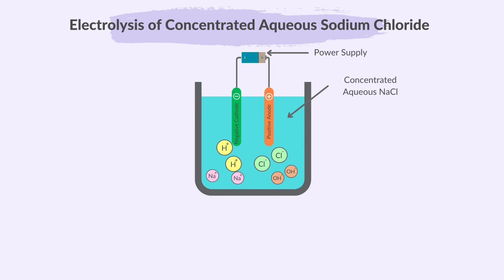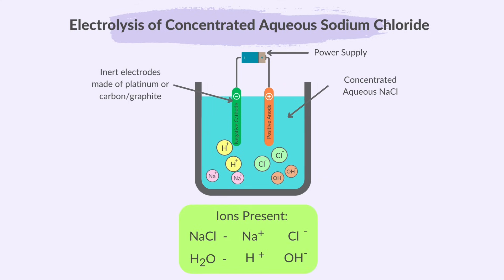Let's observe the electrolysis of concentrated aqueous sodium chloride. Once again, using inert electrodes made of platinum or carbon graphite, we arrange the electrolyte for electrolysis. Remember, in the electrolysis of an aqueous solution, the ions in the electrolyte come from both the dissolved substance and water. So the ions present will be Na+, Cl-, H+, and OH-.